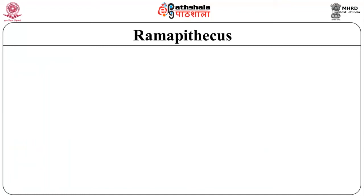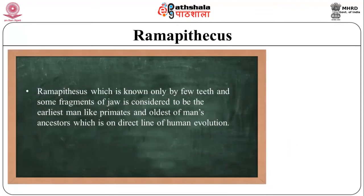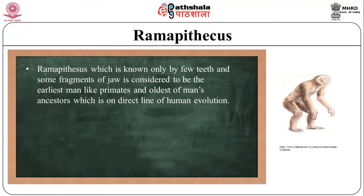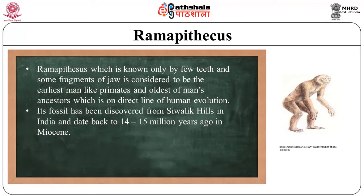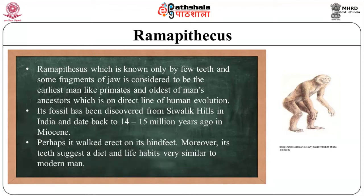Ramapithecus is known only by a few teeth and some fragments of jaw. It is considered the earliest man-like primate and oldest of man's ancestors on the direct line of human evolution. Its fossil has been discovered from the Siwalik Hills in India and dates back to 14 to 15 million years ago in the Miocene. It perhaps walked erect on its hind feet, and its teeth suggest a diet and life habits very similar to modern man.